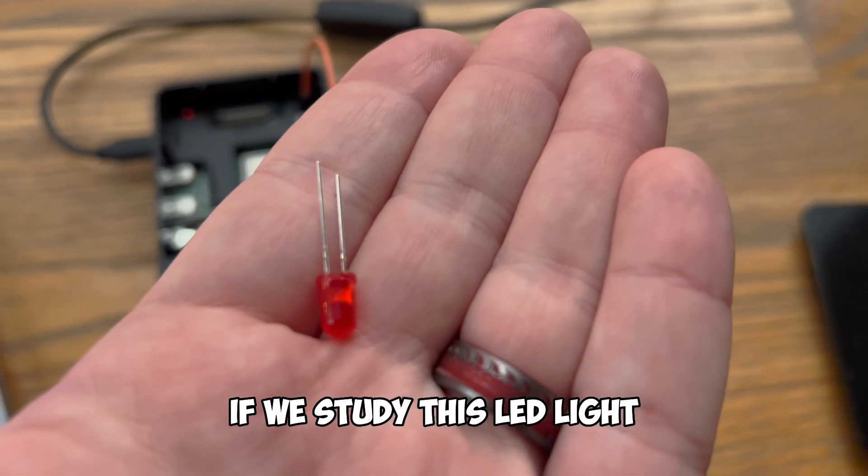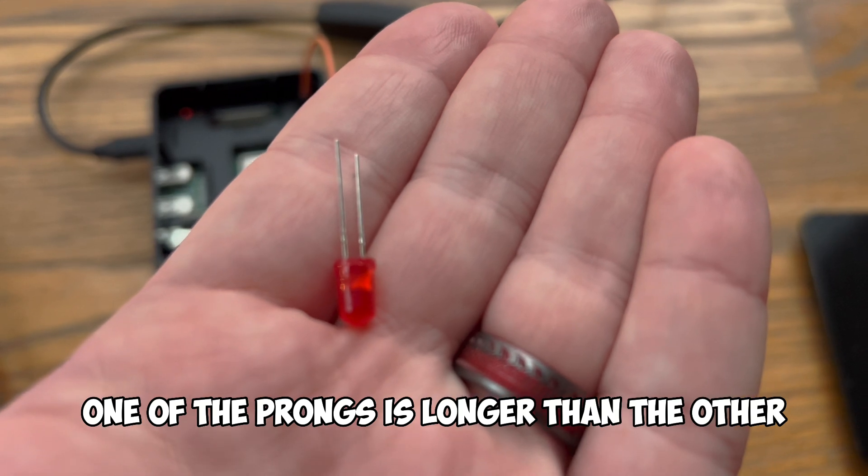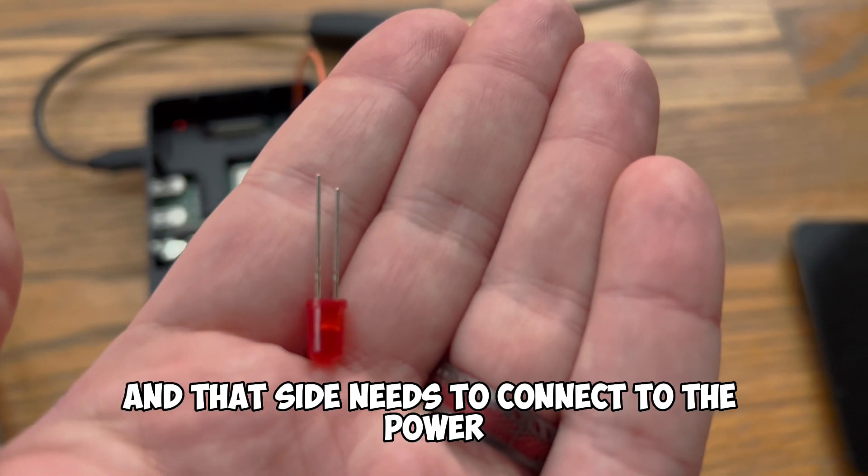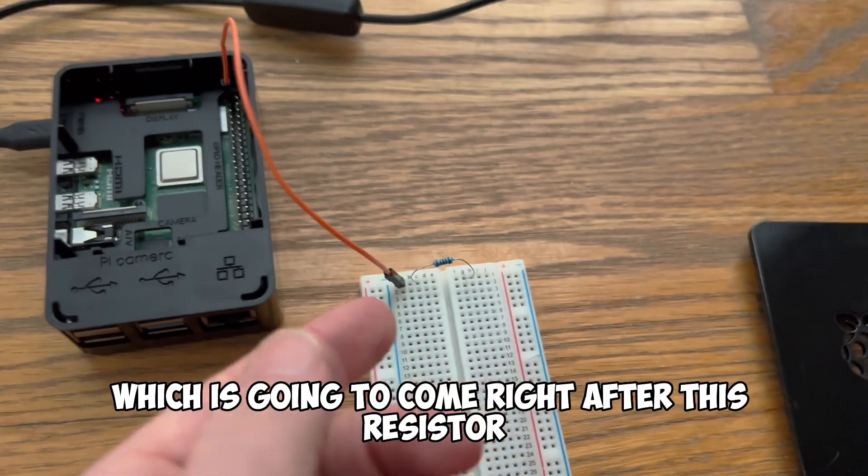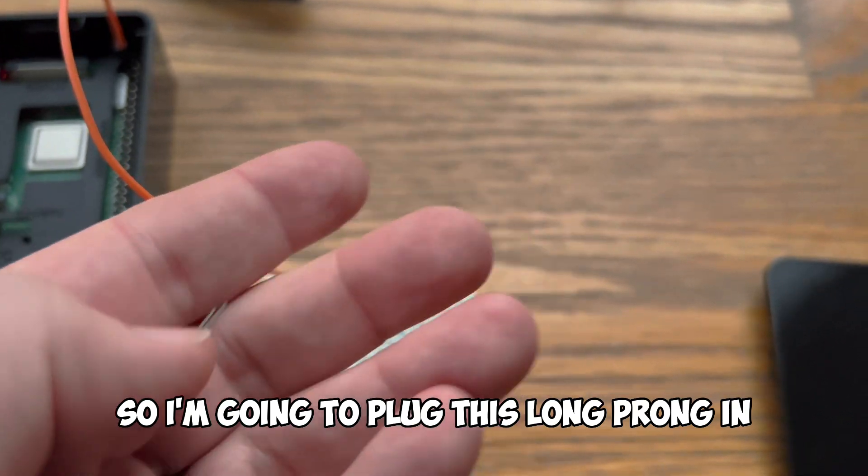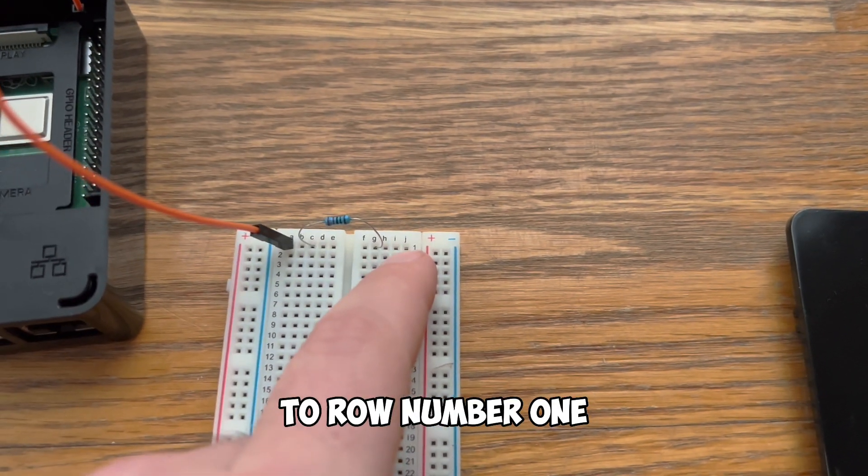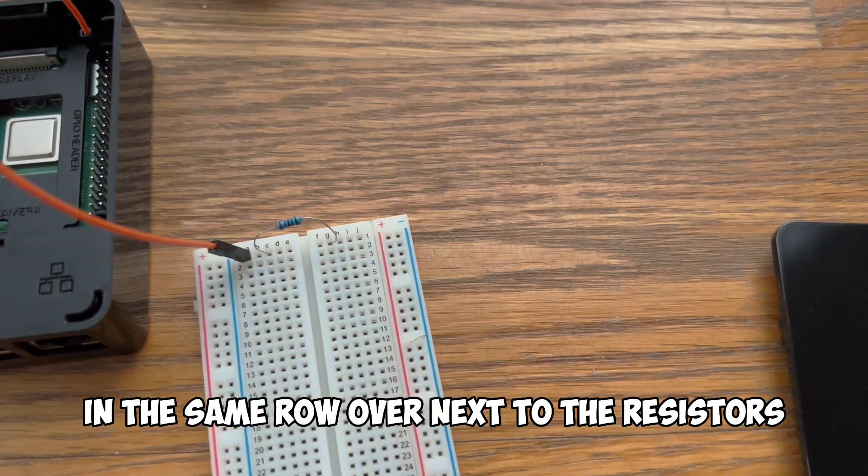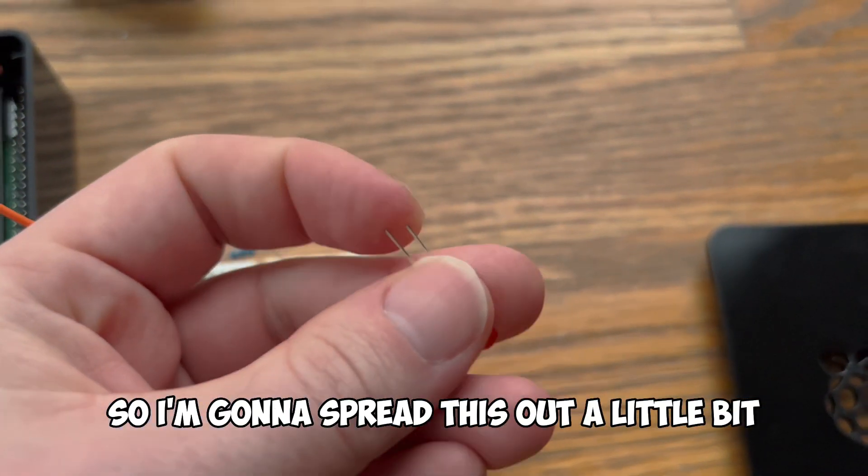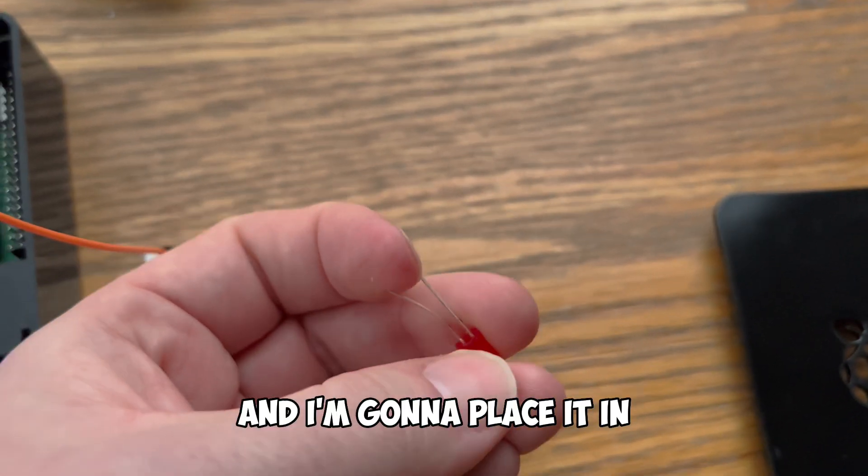Now if we study this LED light you'll notice one of the prongs is longer than the other. The longer side is the positive side and that side needs to connect to the power which is going to come right after this resistor. So I'm going to plug this long prong in to row number 1 in the same row over next to the resistor. So I'm going to spread this out a little bit so it's able to fit and I'm going to place it in.